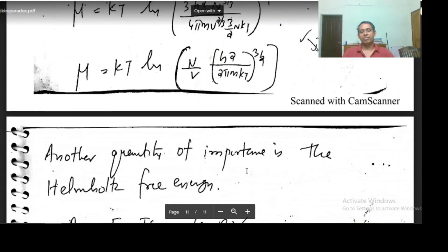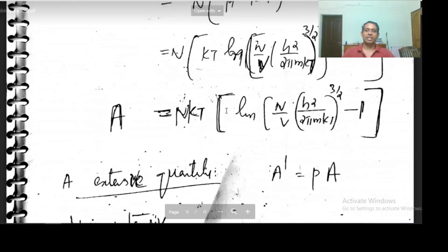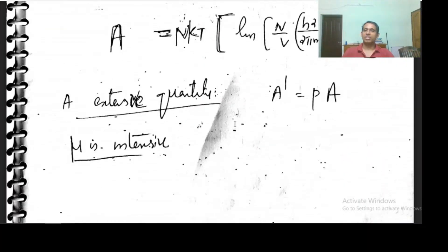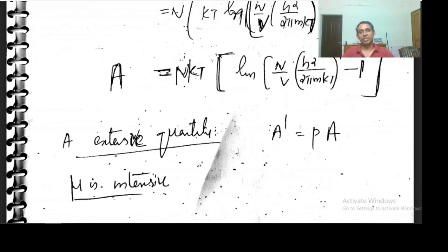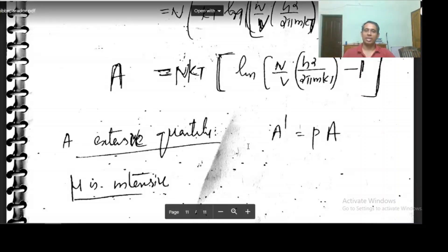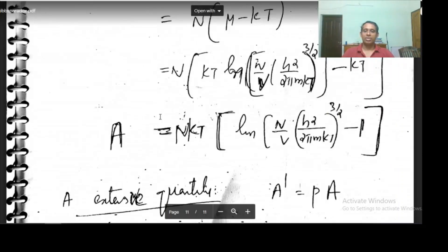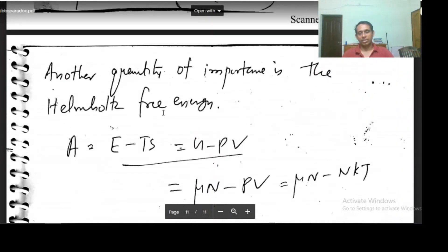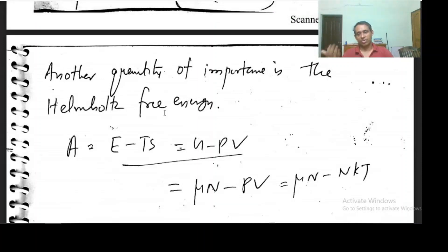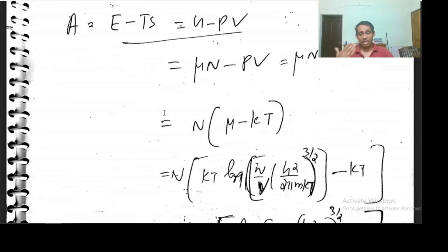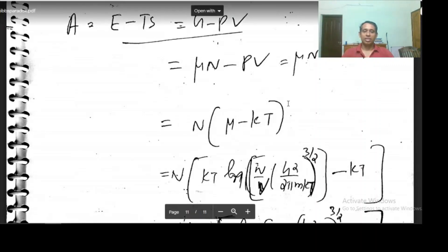Actually, we did not calculate chemical potential or Helmholtz free energy in the previous section, because we did not have a correct expression for entropy. Now we have the correct expression for entropy, and so we have correct expressions for energy, chemical potential, and Helmholtz free energy.